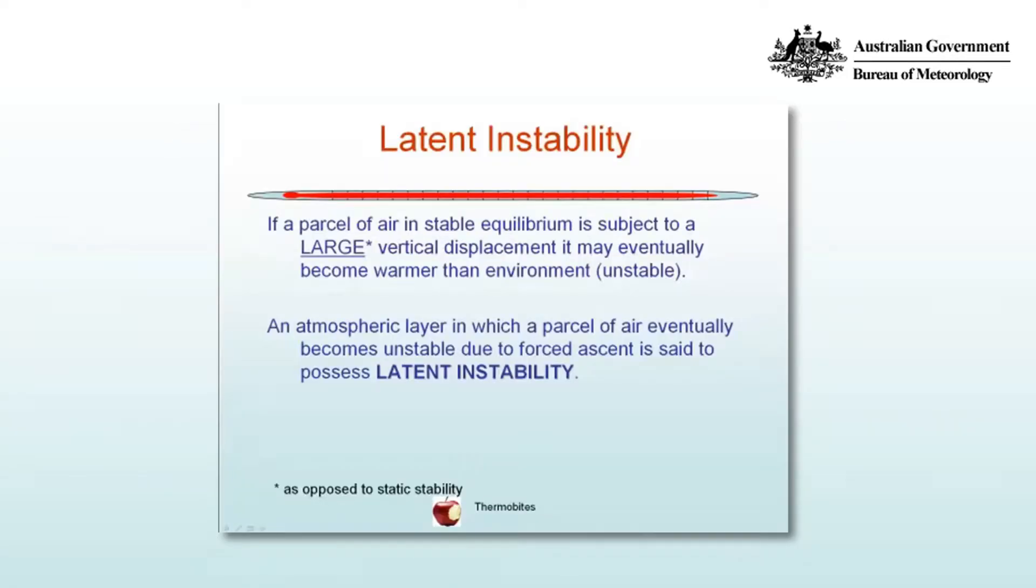In this video we consider the concept of latent instability. If a parcel of air in stable equilibrium is subject to a large vertical displacement, it may eventually become warmer than the environment and therefore unstable. This is opposed to static stability where parcels are given a small vertical displacement. An atmospheric layer in which a parcel of air eventually becomes unstable due to forced ascent is said to possess latent instability.